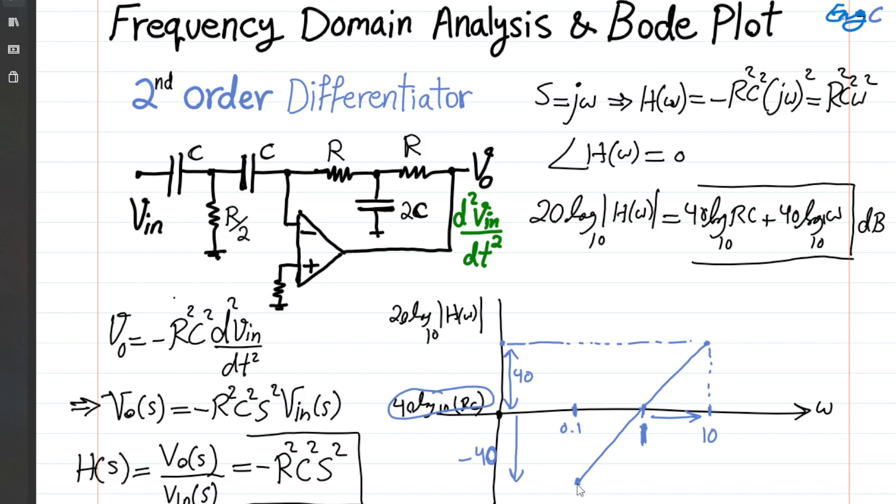And you can see that every time you reduce the frequency by 10X, then you have to reduce the value on the vertical axis or the magnitude by another 40 dB.